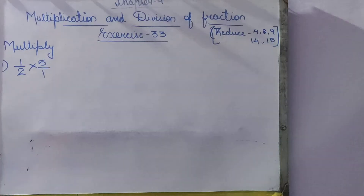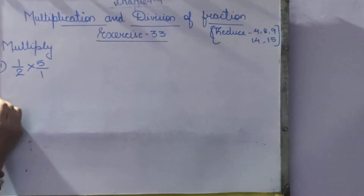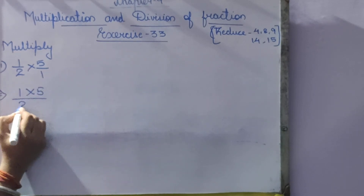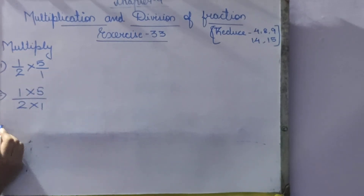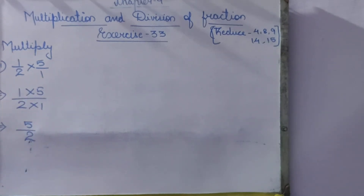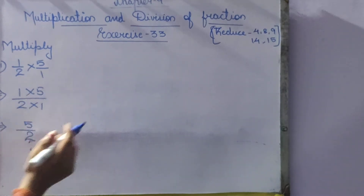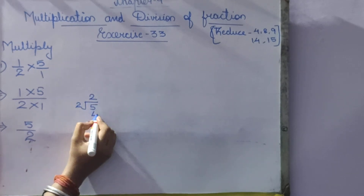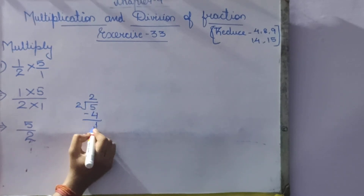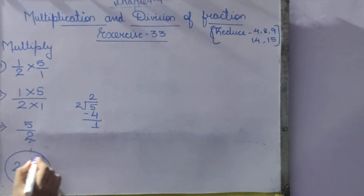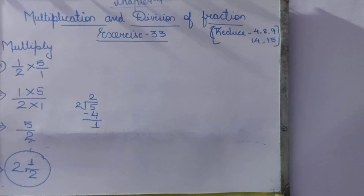We can put 1 in the denominator of 5, so it becomes 1/2 × 5/1. Now multiply: 1 × 5 and 2 × 1. So 1 fives are 5 and 2 ones are 2. Answer is 5/2. Since numerator is greater than denominator, we convert to mixed fraction: 5 divided by 2 gives 2 remainder 1, so the answer is 2½.